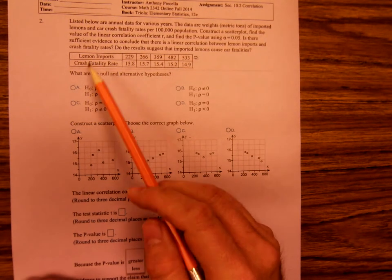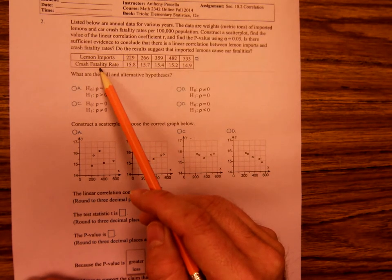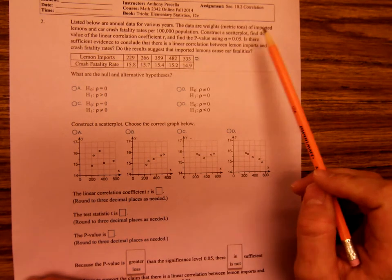Listed below are annual data for various years. The data for weights of imported lemons and car crash fatality rates per 100,000 populations. We have lemon imports, car crash fatality. Construct the scatter plot. Find the value of the linear correlation or find the p-value using alpha equals .05. Is there significant evidence to conclude that there's a linear correlation between lemon imports and car crash fatalities?